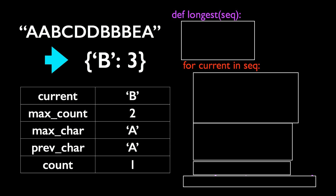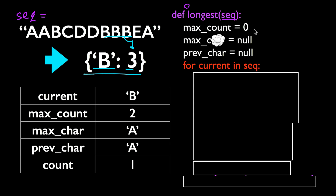Let's see what this solution might look like in code. We're going to write a function called longest which takes seq as the input, and seq is of course the given sequence of characters. Just for convenience, here I'm going to assume that seq is always non-empty. And the return value from this function will be a dictionary or hash table with the length of the longest sequence with a single character as the value, and the corresponding key will be that character.